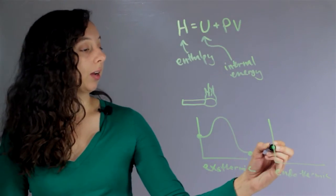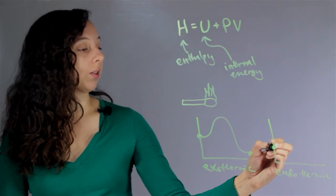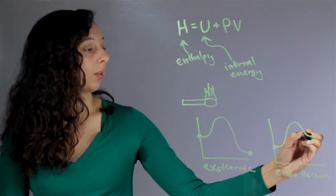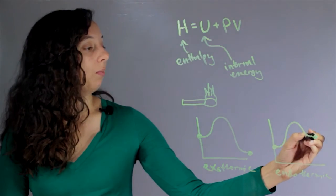So endothermic, let's say that we start with a system with a certain amount of heat, and then at the end it has a lot more.